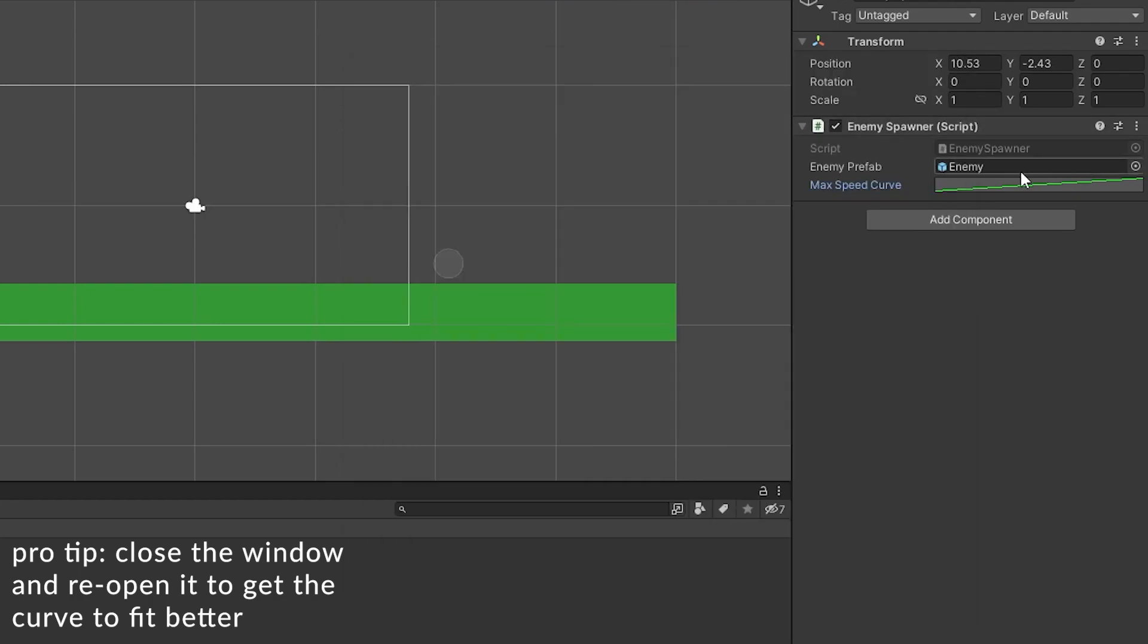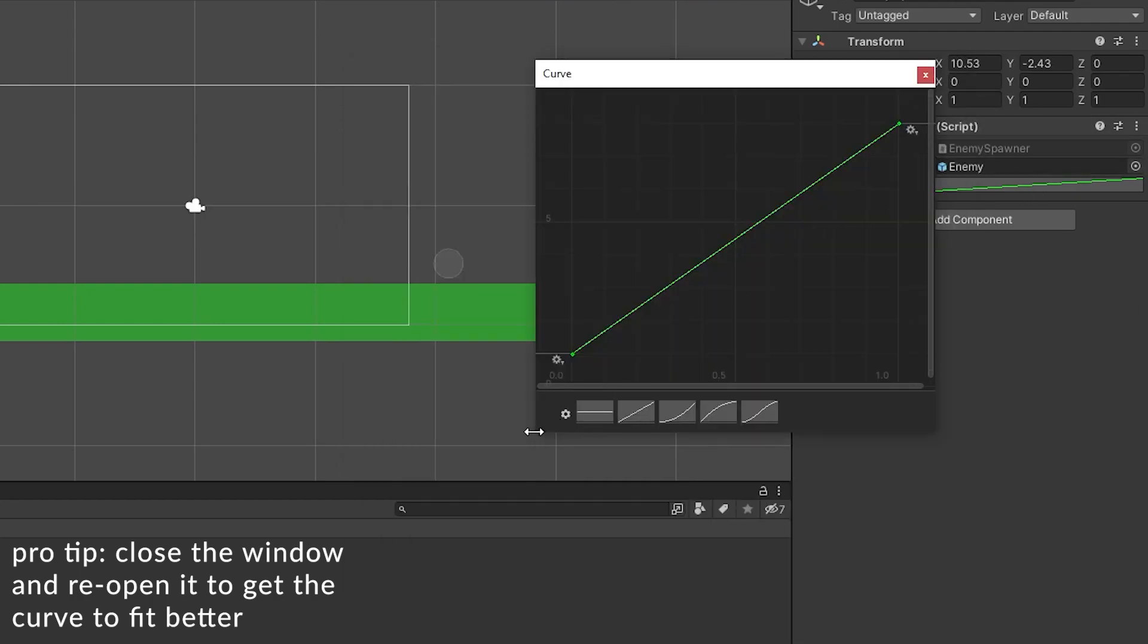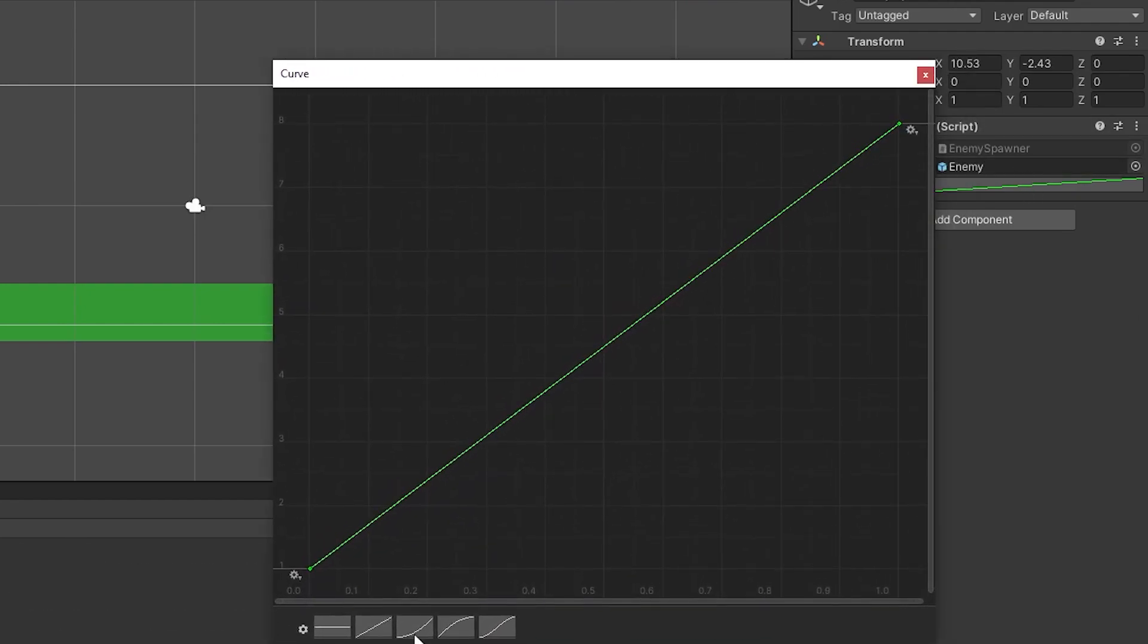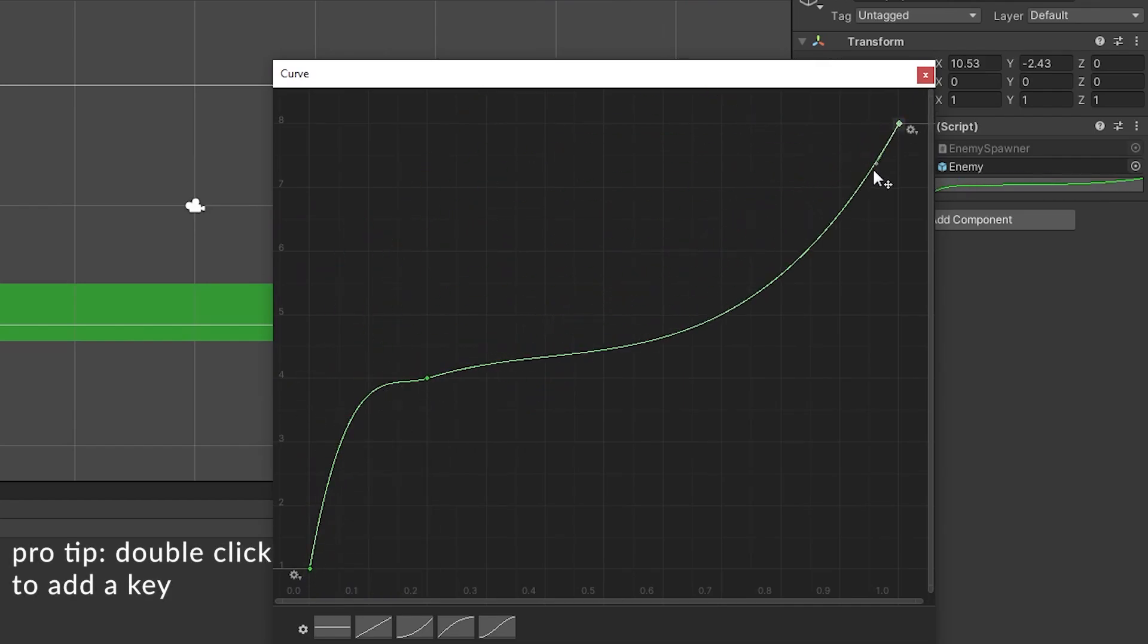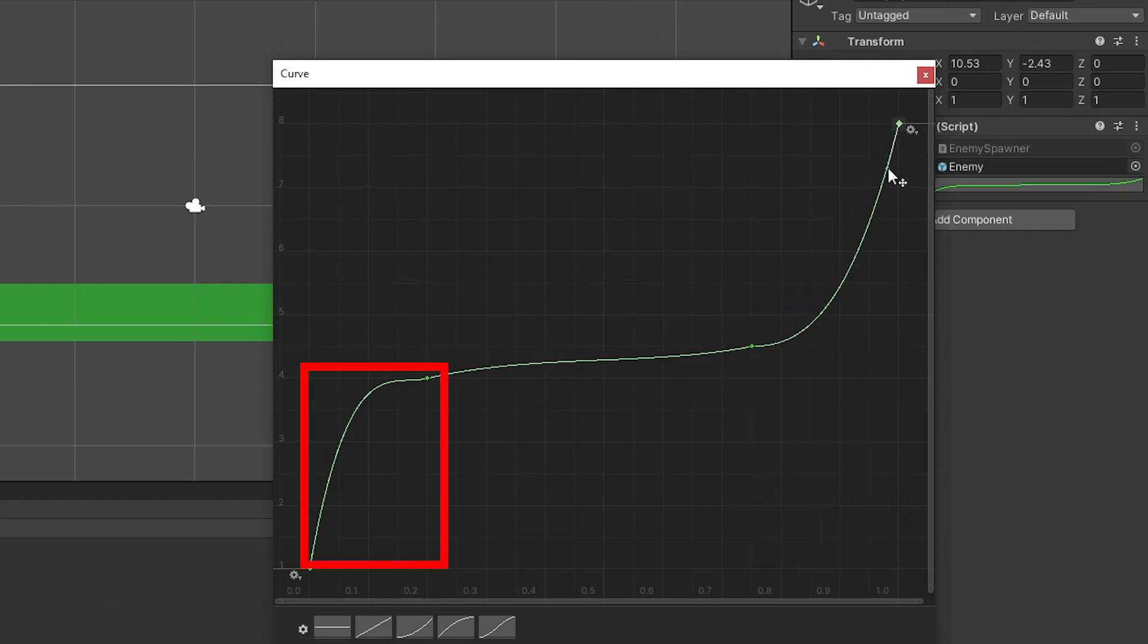Also, remember your quantile rules. Time of zero should be where the minimum value is, and time of one is where the maximum value should be. Steeper sections mean that it's less likely to be around that number, and flatter sections mean that the value will be more common. Here, I have about 20% of all enemies spawning in, with speeds ranging from a speed of 1 to a speed of 4.